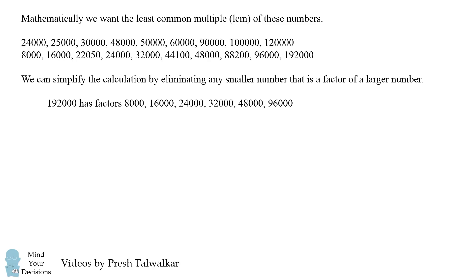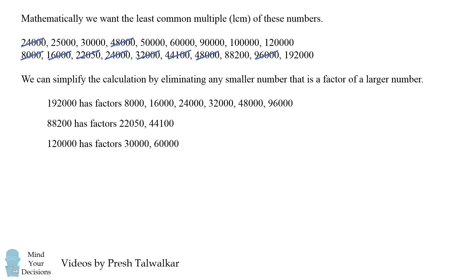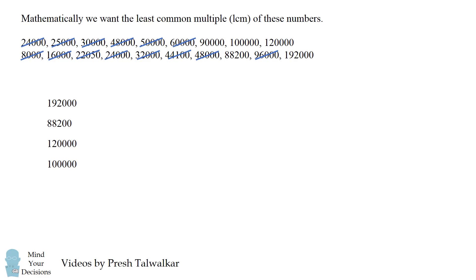For example, 192,000 has factors of 8,000, 16,000, 24,000, 32,000, 48,000, and 96,000. So we can eliminate all of these smaller numbers from the list, because the least common multiple will at least be as large as this largest number. We can do the same for other numbers in the list, and when we do that, we end up eliminating quite a bit. We're left with only five different numbers, and we need to find the LCM of these five.